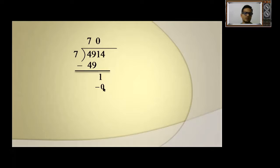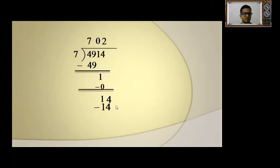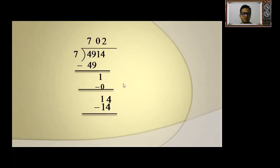After subtracting, we get 1, and bring down the next digit 4, giving us 14. Now 7 times 2 is 14, so we can give 2. Solving this way, sometimes you might write 72 as the answer — but that is wrong. The correct answer is 702, because you must include the zero in the quotient.